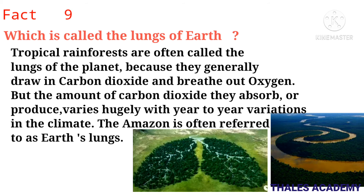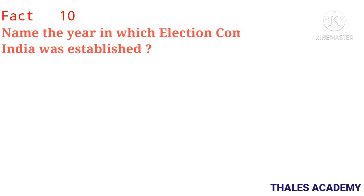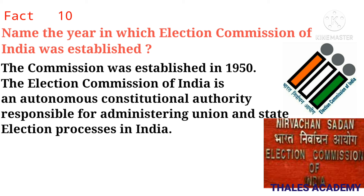Fact 9: Which is called the lungs of the Earth? Tropical rainforests are often called the lungs of the planet because they generally draw in carbon dioxide and breathe out oxygen, though the amount of carbon dioxide they absorb or produce varies hugely with year-to-year climate variations. The Amazon is often referred to as Earth's lungs, responsible for producing about 20% of the Earth's oxygen.